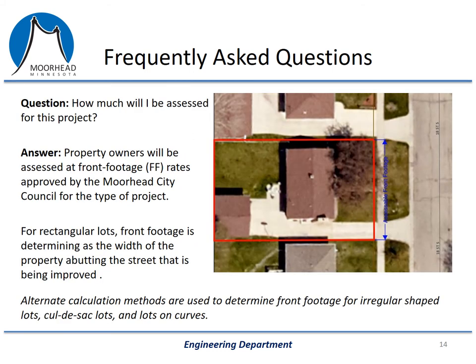How much will I be assessed for this project? Property owners will be assessed at front footage rates approved by the Moorhead City Council for the type of project being done. For a rectangular lot, front footage is determined as the width of the property abutting the street that is being improved — basically, how wide is your property. If you look at the picture on the right, you can see the property with the red boundary as the property line, and the blue arrow is measuring the width of that lot next to the street. If you live in a cul-de-sac or an irregularly shaped lot, we have alternative methods for determining that measurement.